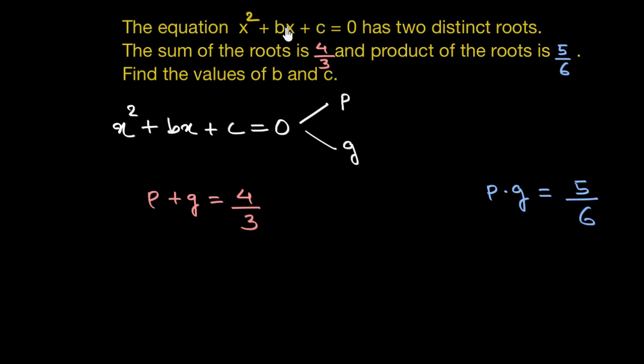So in a way, we are asked to find the value of this coefficient of x, b, and the constant term c. And at the same time, we are given the sum of roots and the product of roots. So my intuition says that there has to be some connection, some relation between the coefficients and the sum and product of roots.